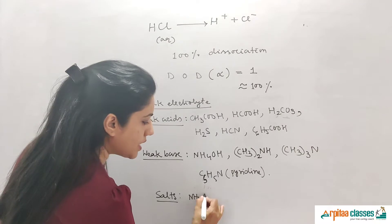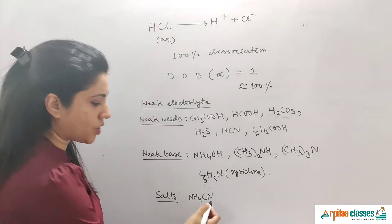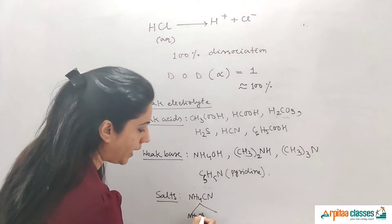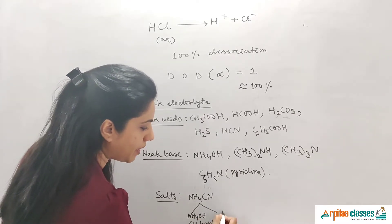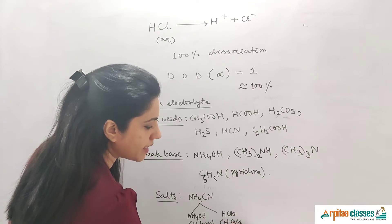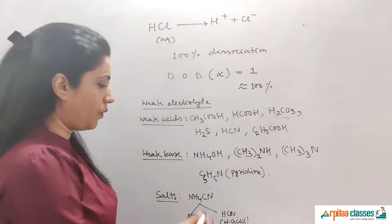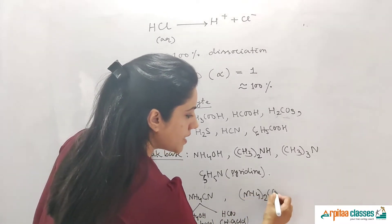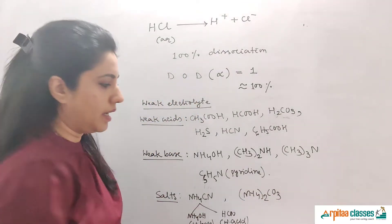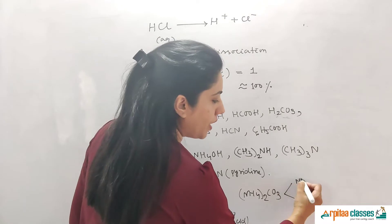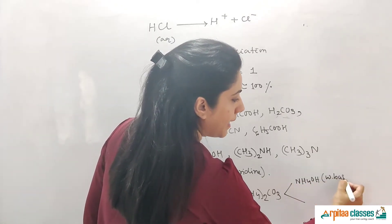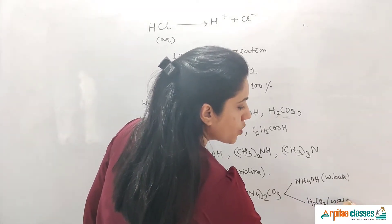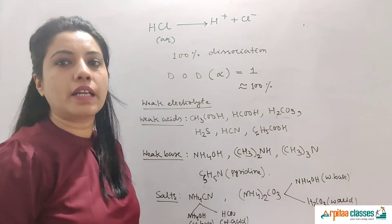For example, NH4CN is made up of NH4OH, which is a weak base, and HCN, which is a weak acid. Since both components are weak, NH4CN is a weak salt. Similarly, ammonium carbonate (NH4)2CO3 is made up of NH4OH (weak base) and H2CO3 (weak acid). Both components are weak, so the salt is a weak electrolyte.